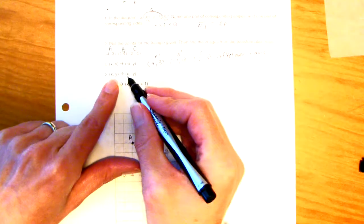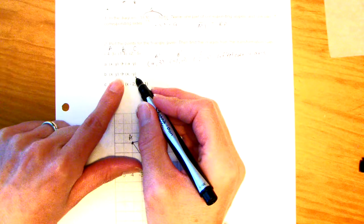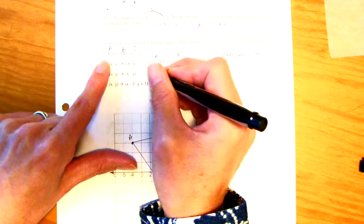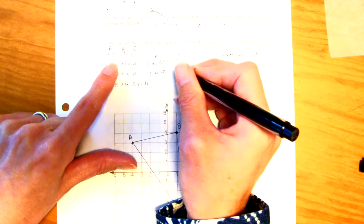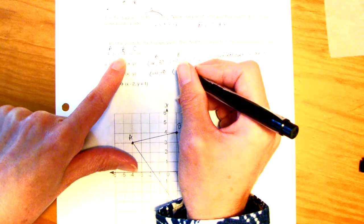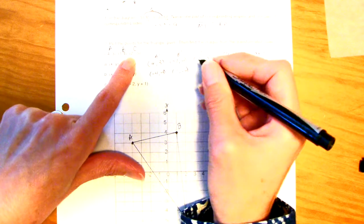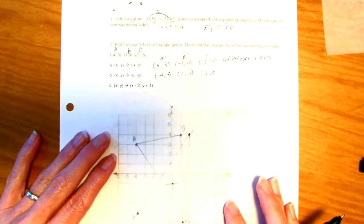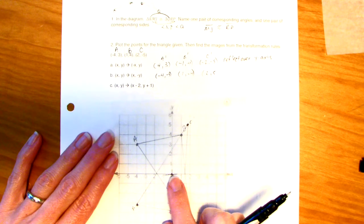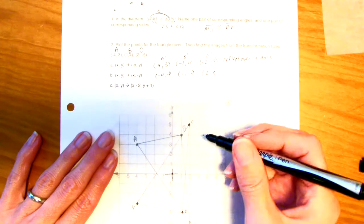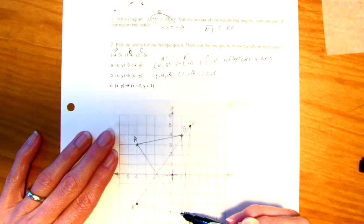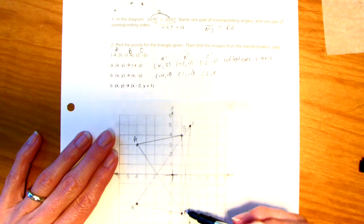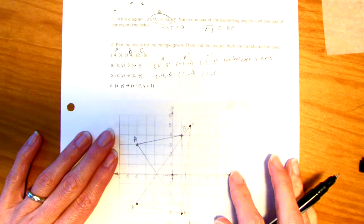Now part B. We're going to keep the same X value, but change the sign of the Y value. So, this will be negative 4, negative 3. The B prime will be 1, negative 4. And then we have 2, 5. I have my origin right there. I'm going to go over 2, 5 for C. B prime is 1, negative 4. And then negative 4, negative 3. So, here's the second one.